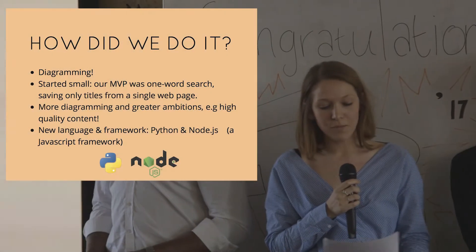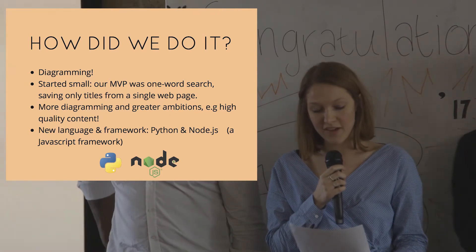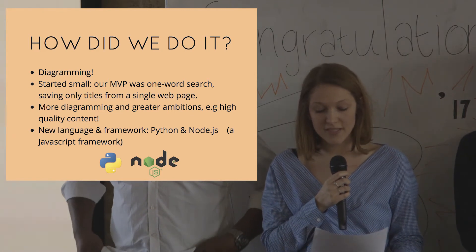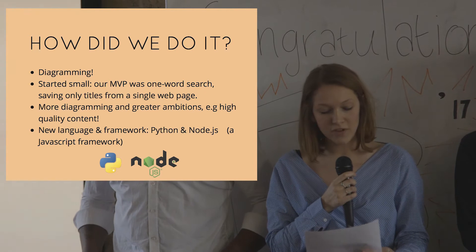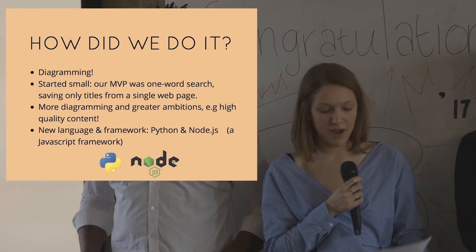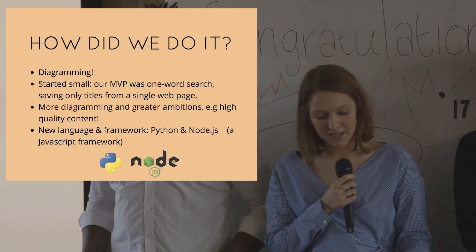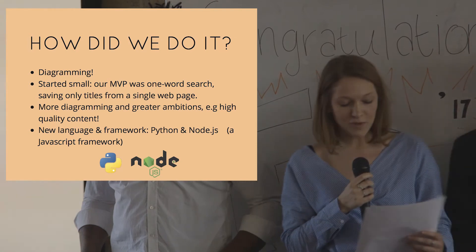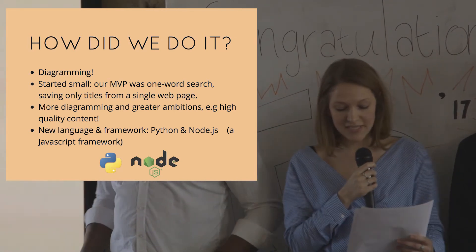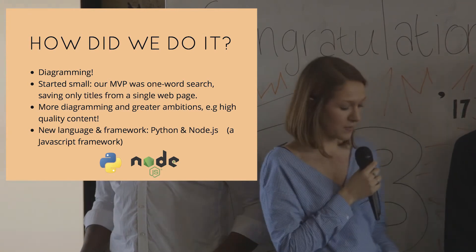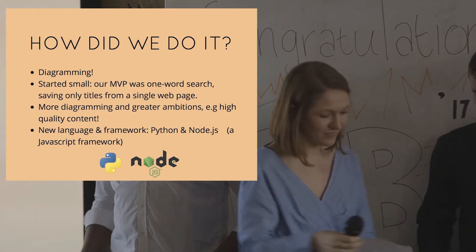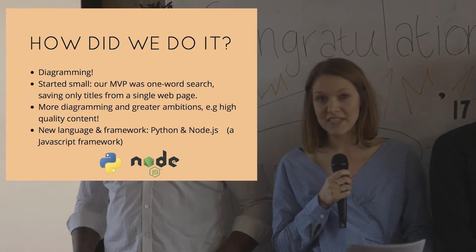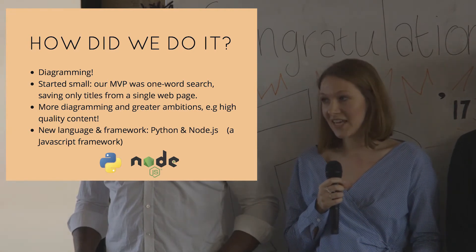Our first step was to break down a search engine to its smallest possible working version — crawling one webpage for its links and text, and then using our querier to search one word from that page. From there, we gradually expanded the scope and capabilities of our two programs, eventually crawling 28,000 links, searching multiple words, and filtering for high-quality content. We wanted to use new technologies and decided to maximize this by building our crawler and querier in two different languages.